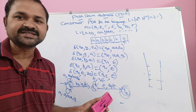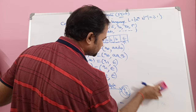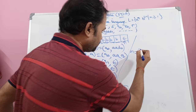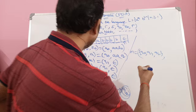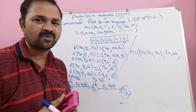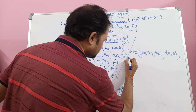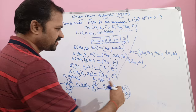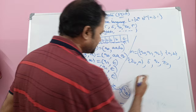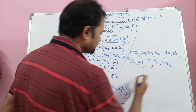Now let us write the pushdown automata tuples. M = (Q, sigma, tau, delta, q naught, z naught, F). Q = {q naught, q1, q2}. Sigma (input alphabet) = {a, b}. Tau (stack alphabet) = {z naught, a}. Delta is the set of transition functions already written. The initial state is q naught, the initial stack symbol is z naught, and the final state is q2. This is the pushdown automata for this language.